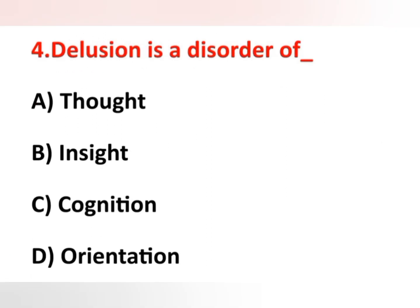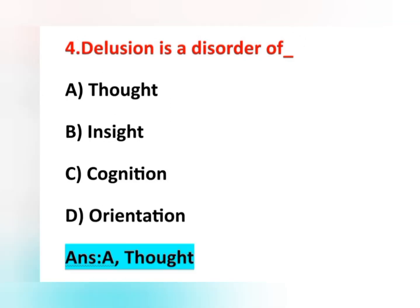Fourth question: Delusion is a disorder of — option A thought, option B insight, option C cognition, option D orientation. Delusion is a thought disorder — option A is the correct answer.